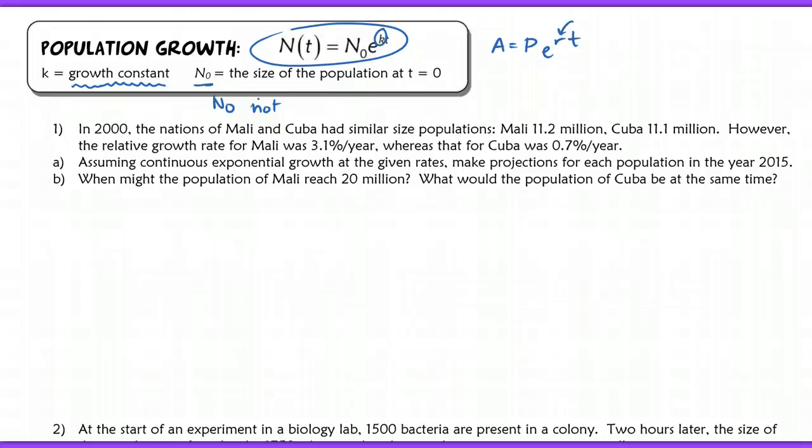In this question here, it says in 2000, the nations of Mali and Cuba had similar size populations. However, the growth rates were different. So there are different growth rates here. Assuming continuous exponential growth at these given rates, what projections would be made for the population in the year 2015? We're going to assume that we're starting in the year 2000, so that's going to be T equals zero.